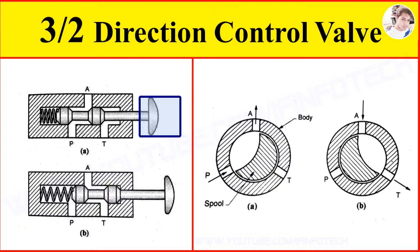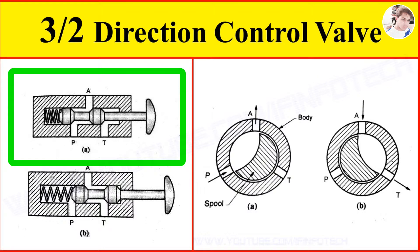3x2 valves are used to operate single acting cylinders and unidirectional motors. In the spooled position, as shown in figure A, there is a connection from port P to port A. Oil flows from palm to the single acting cylinder. Hence, the single acting cylinder extends.